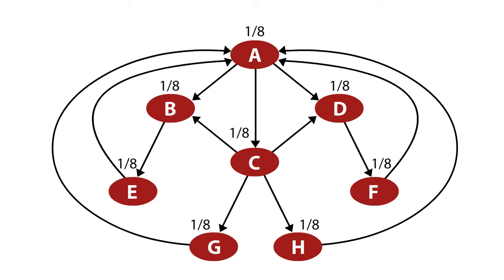So for example, let's start with nodes B and D. A divides its 1/8th of a unit of PageRank into three equal shares, each 1/24th, and hands it to each of the three pages it points to, B, C, and D. Now those are the only links coming into B and D, so they're going to just get 1/24th as their PageRank.